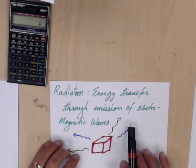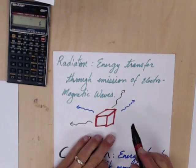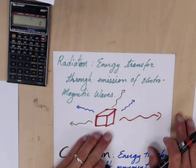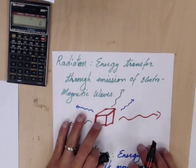Radiation is when you get energy transfer through emission of electromagnetic waves. So like here's my really, really hot object and light waves are coming off of it, and so heat's going from there to a colder object somewhere else. We're going to get to this one later when we get into electromagnetic waves.